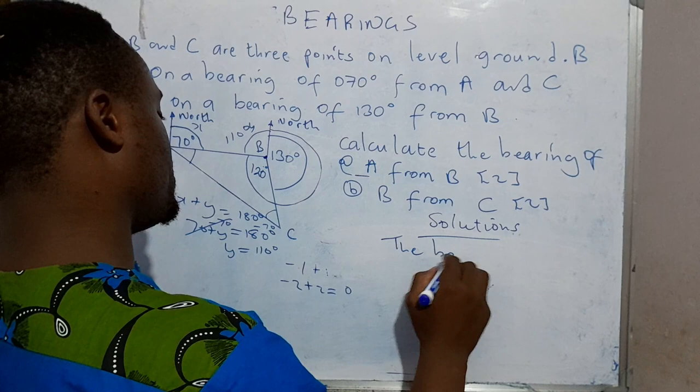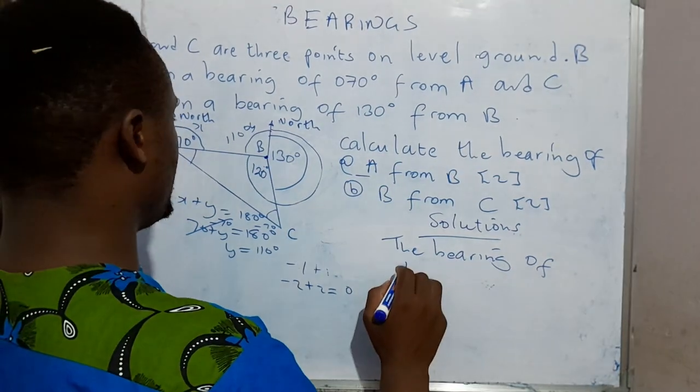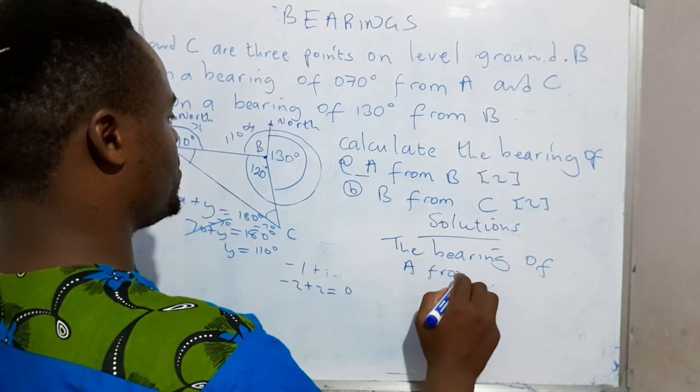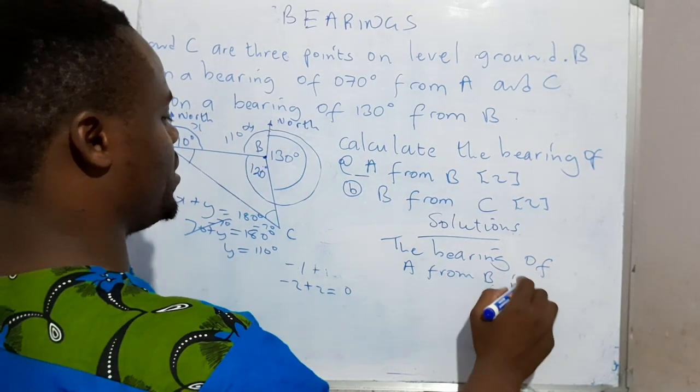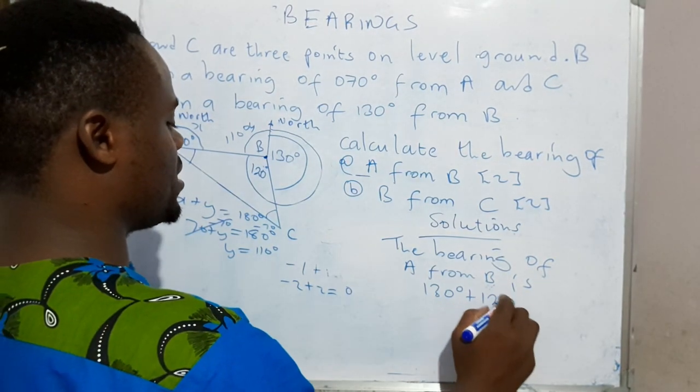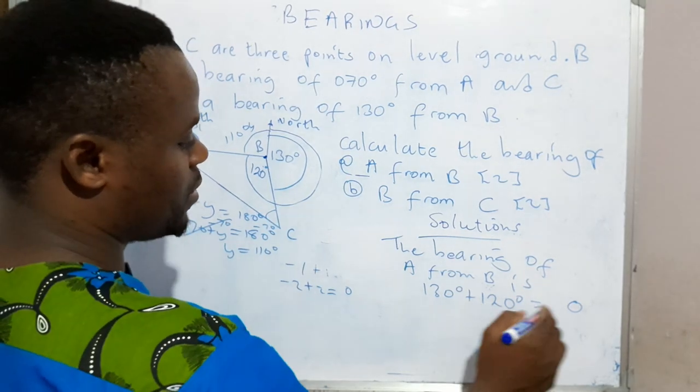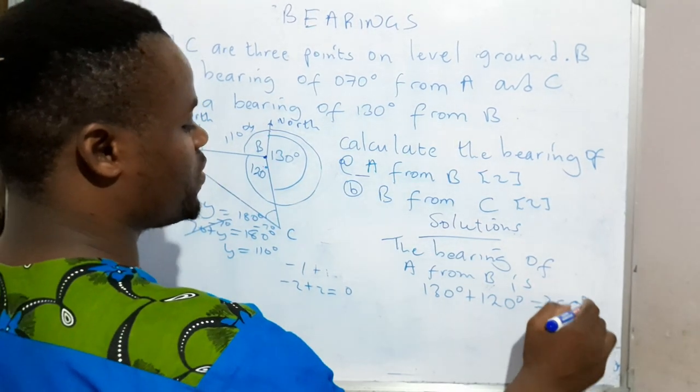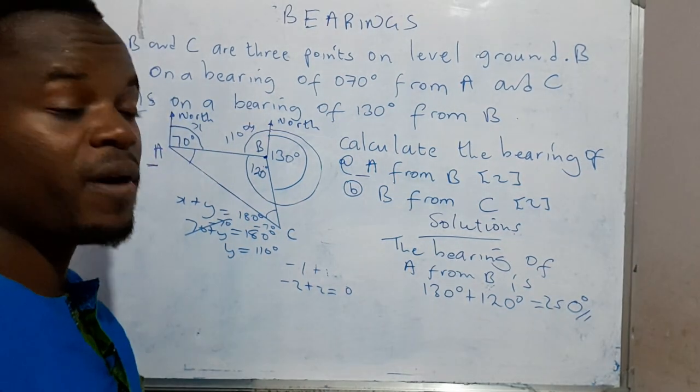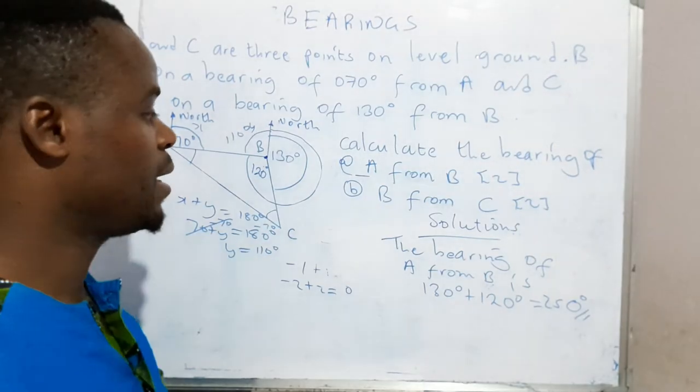The bearing of A from B is 130 degrees plus 120 degrees, which is equal to 250 degrees. And we found the bearing of A from B: 250 degrees. Let's move on to part B.